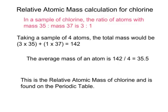So on average, each of those atoms weighs a quarter of 142, which is 35.5 units. And this is how we work out the relative atomic mass for chlorine, and that's the number which is found in that periodic table.